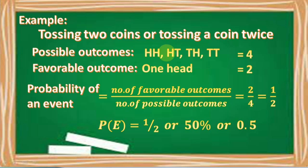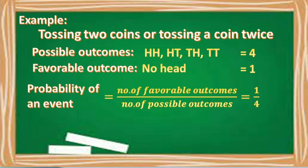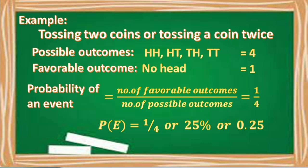For example, our assigned favorable outcome is no head, meaning the outcome is both tails. As you can see, we have only one tail-tail outcome. Therefore, the number of favorable outcomes is 1. Thus, the probability of an event is equal to 1 over 4, or one-fourth. P(E) = 1/4, or 25%, which is also equal to 0.25.